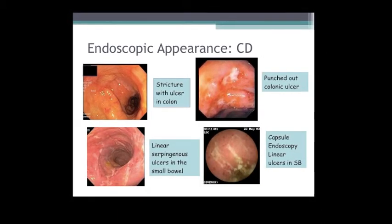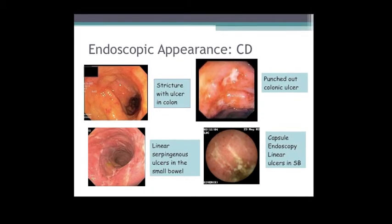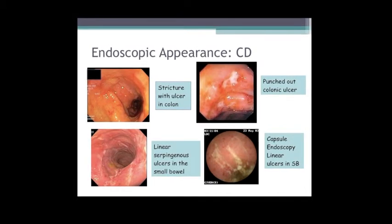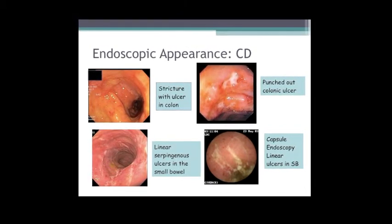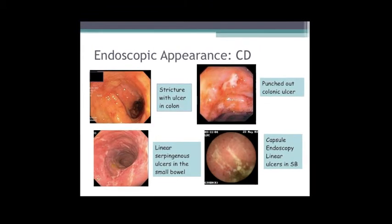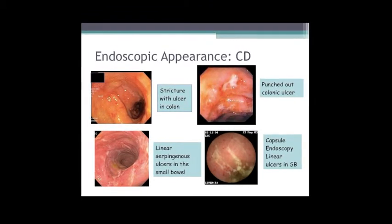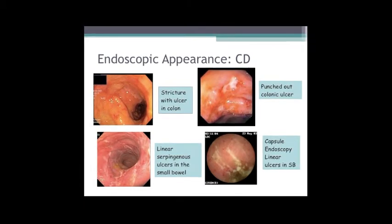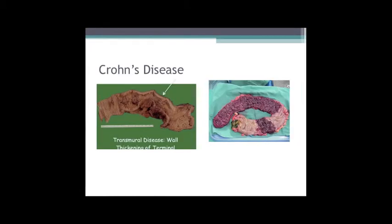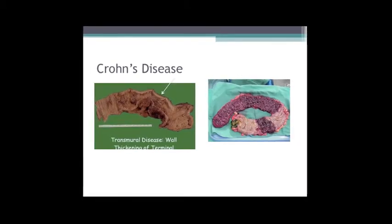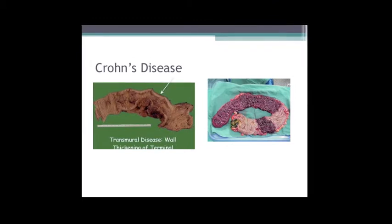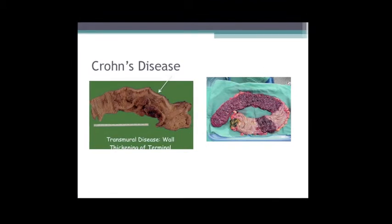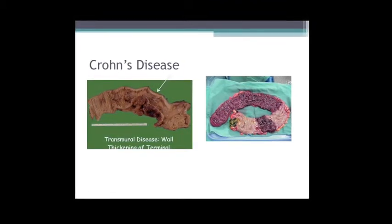On small bowel follow-through and endoscopy, the appearance is patchy with linear serpiginous ulcers. Crohn's disease is associated with stricturing disease; ulcerative colitis not so much - if you get stricturing with UC you have to think about colon cancer. Classically punched-out linear ulcers are very classic for Crohn's disease. This example shows a skip lesion: normal, normal, bad, bad.